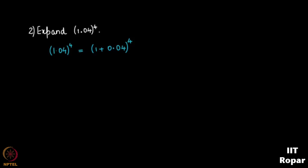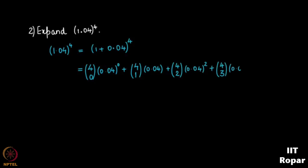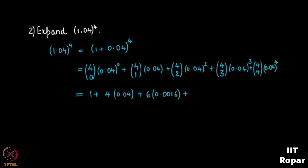Applying the binomial formula to (1 + 0.04)^4: 4C0·1 + 4C1·(0.04) + 4C2·(0.04)² + 4C3·(0.04)³ + 4C4·(0.04)^4. Since all powers of 1 are just 1, we get: 1 + 4·(0.04) + 6·(0.0016) + 4·(0.000064) + 1·(0.04)^4.